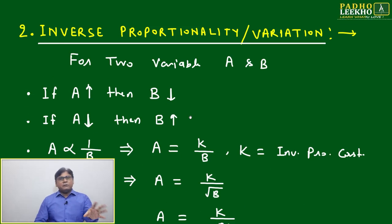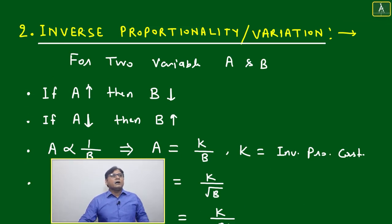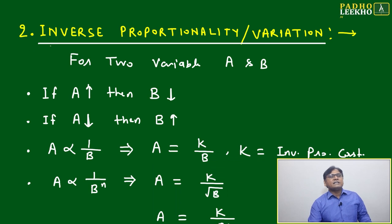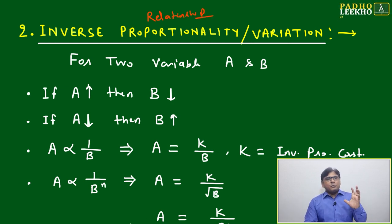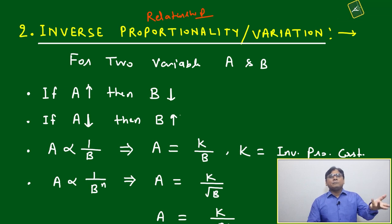Now I think direct proportional we have understood very well, but we will come to the next type of relation that is called inverse variation or inverse relationship or inverse proportionality. Here you can write relationship also, no need to confuse, both are same. But inverse proportionality will be exactly when power will be one, just we look here.